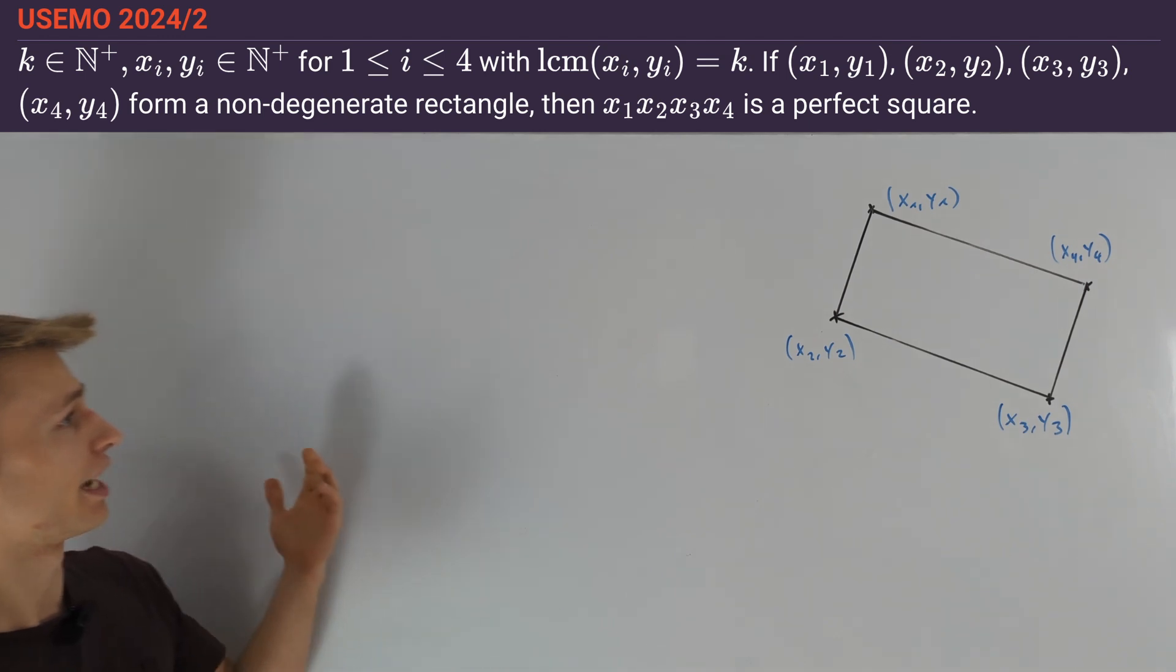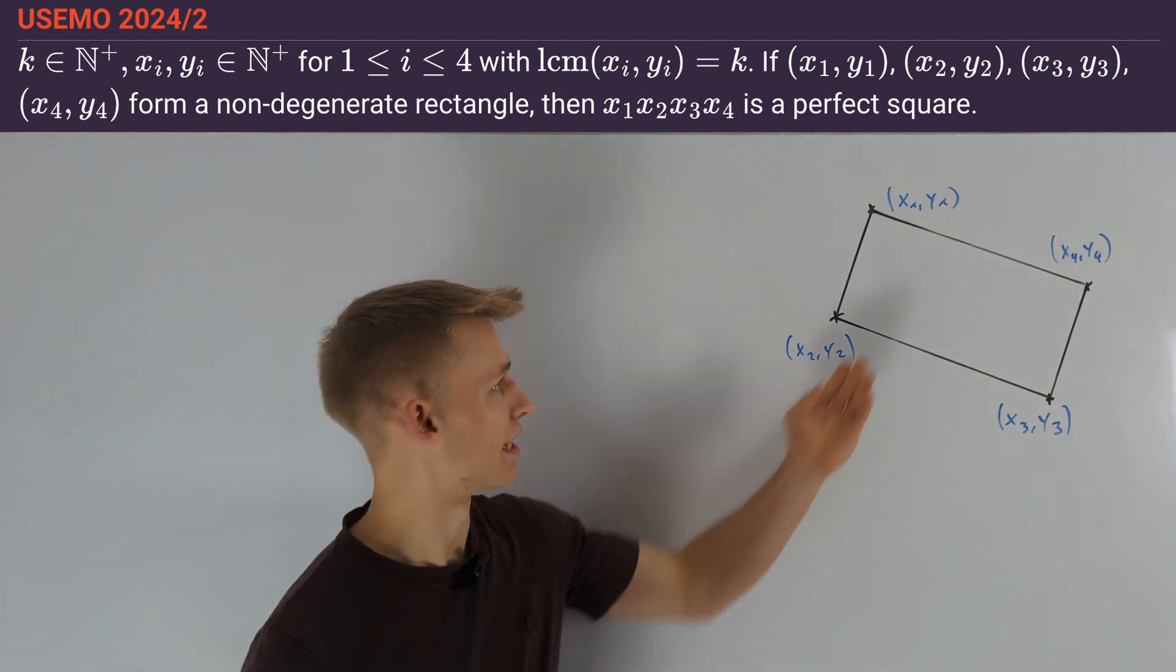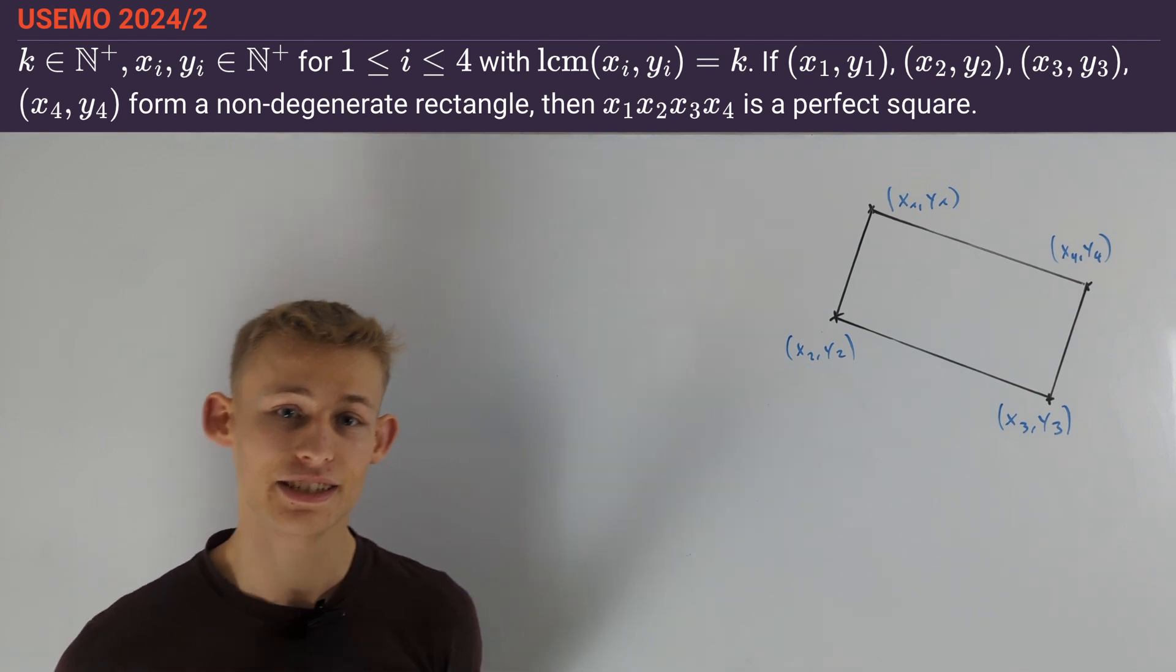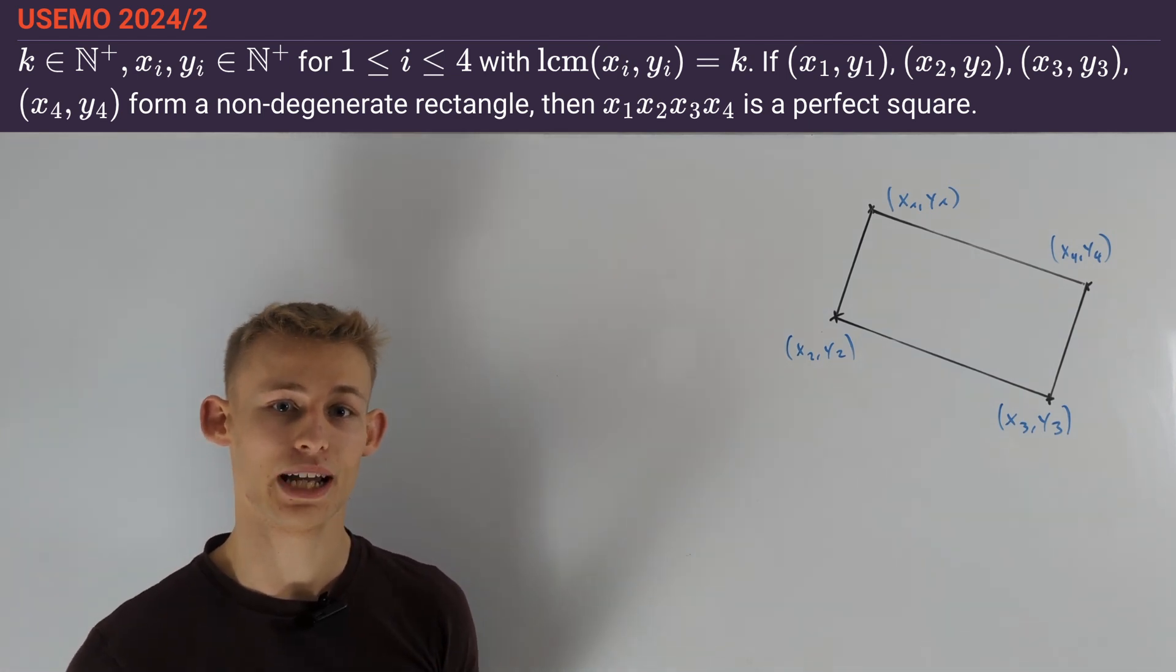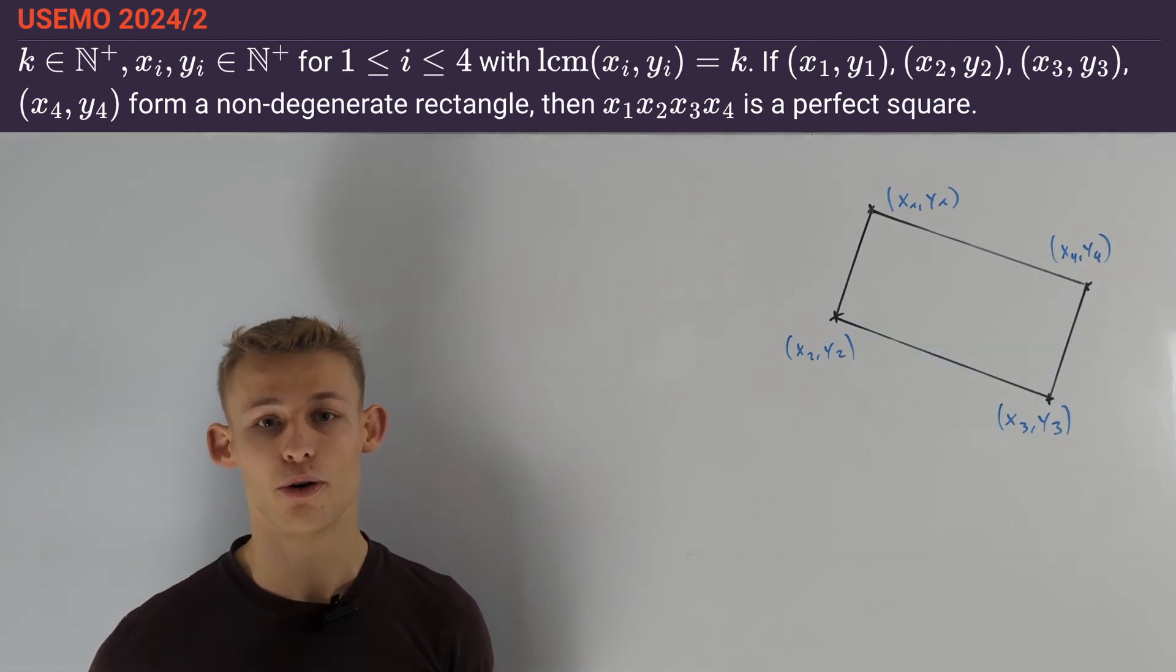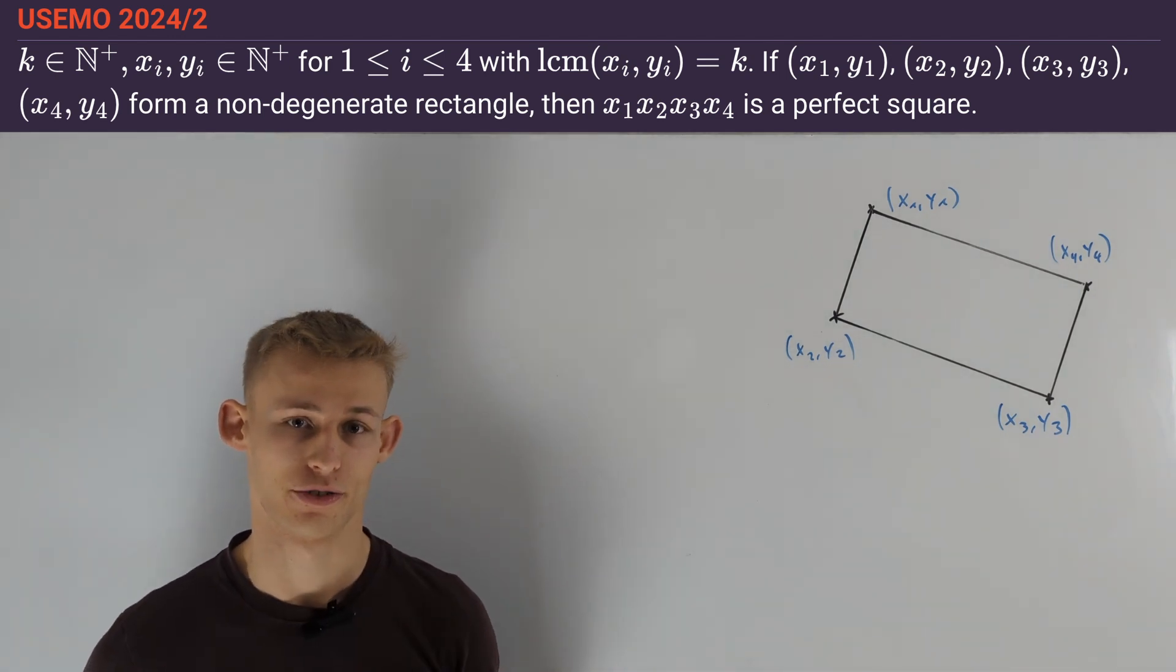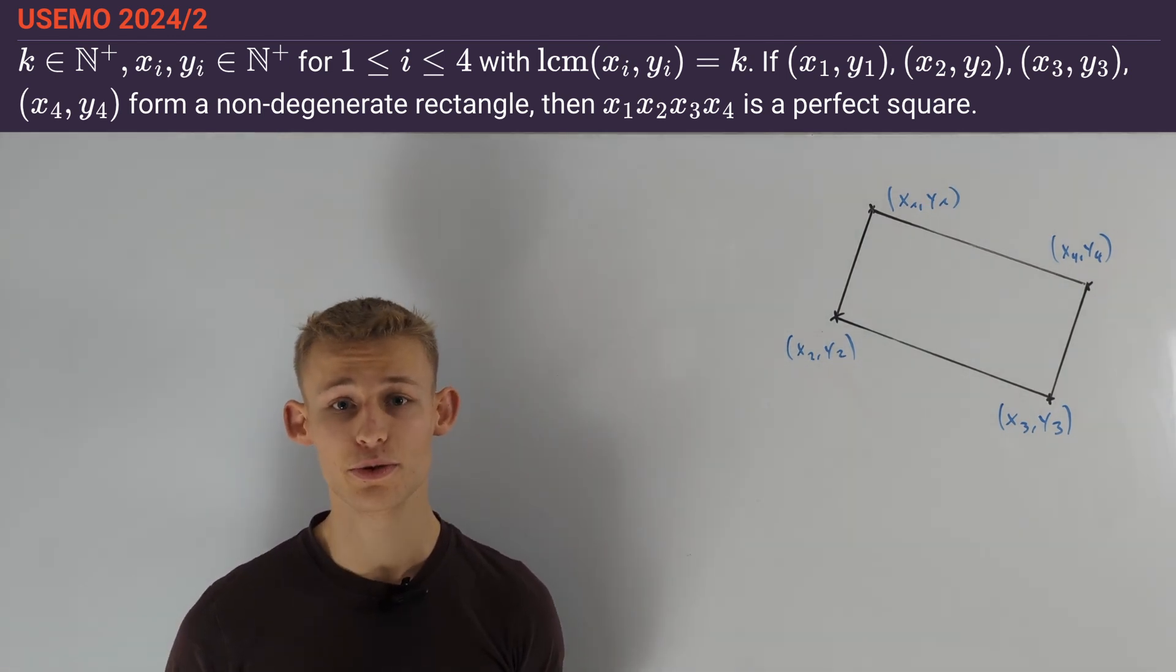We have given a positive integer k and positive integers x1, y1 up to x4, y4 such that the least common multiple of xi, yi is equal to k. Moreover it is given that these four points form a non-degenerate rectangle. Our task is to prove that the product of the four x-coordinates is a perfect square.